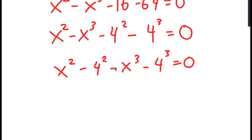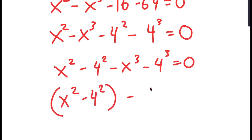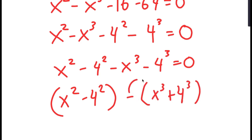So now there are two properties that I'm going to use. I'm going to rewrite this as x squared minus 4 squared, and I'm going to group this minus x to the power of 3 plus 4 to the power of 3.